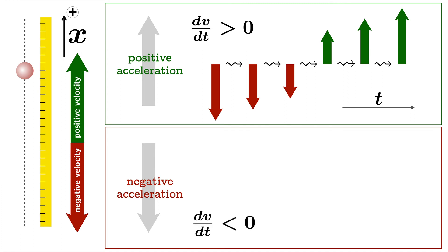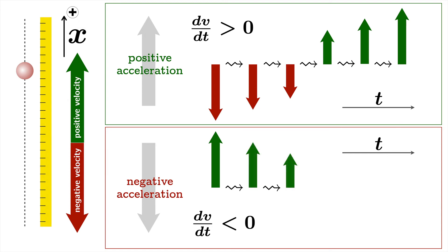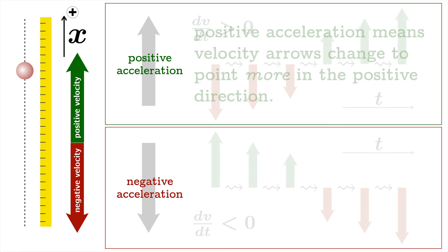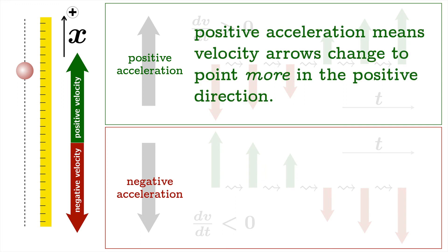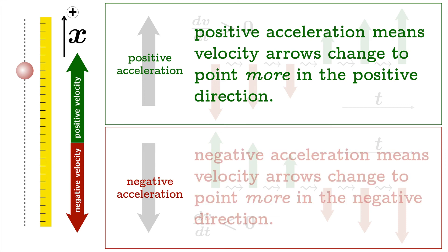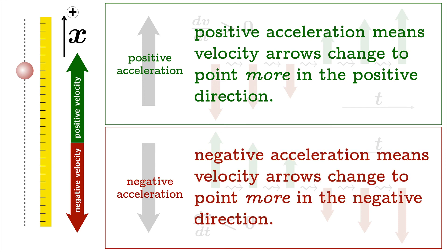Now let's think about negative acceleration — the rate of change of velocity with respect to time is negative, so the velocity wants to become smaller. If you had a positive velocity, it wants to become less positive, so the arrow length shrinks. If you have negative velocities with negative acceleration, those vectors get larger because the velocity becomes even more negative. To summarize: positive acceleration means velocity arrows change to point more in the positive direction; negative acceleration means velocity arrows change to point more in the negative direction.